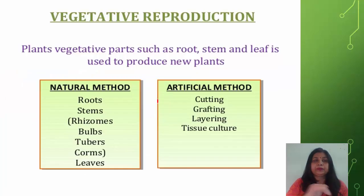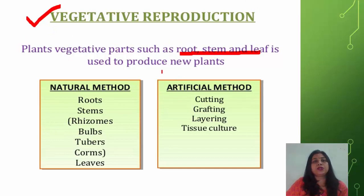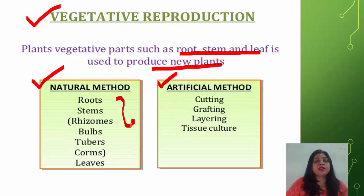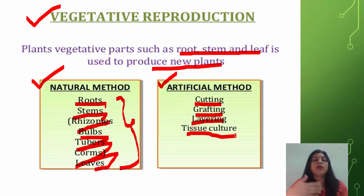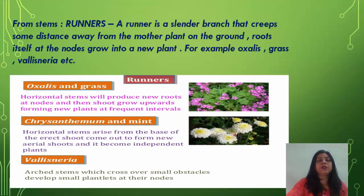Now coming to vegetative reproduction: vegetative parts of plants such as roots, stems, and leaves are used to produce new plants. Vegetative reproduction takes place by two methods: natural and artificial. Natural methods occur naturally with the help of roots, stems, rhizomes, bulbs, tubers, corms, and leaves. Artificially, plants can be grown by cutting, grafting, layering, and tissue culture.